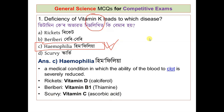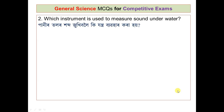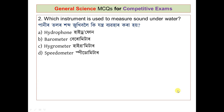Next question: night blindness is caused by deficiency of vitamin A. The second question is: which instrument is used to measure sound underwater? The options are hydrophone, barometer, hydrometer, and speedometer. The correct answer is hydrophone — we use a hydrophone to measure sound underwater.